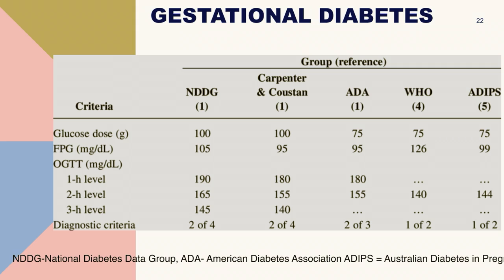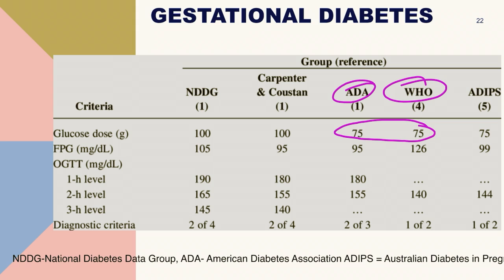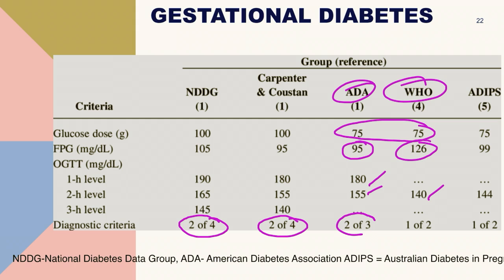The criteria to diagnose gestational diabetes mellitus differ by organization. For ADA and WHO using 75 g glucose dose, fasting blood sugar cut-offs are 95 and 126 mg/dL respectively. ADA includes 1-hour and 2-hour OGTT levels, while WHO uses a direct 2-hour level. For diagnosis: 2 out of 4 values in NDDG and Carpenter-Coustan criteria, 2 out of 3 in ADA, and 1 out of 2 in WHO and IADPSG criteria diagnose gestational diabetes.